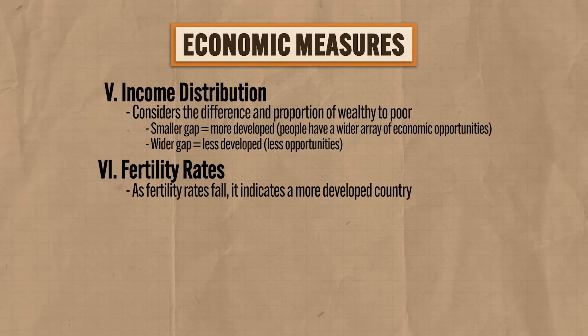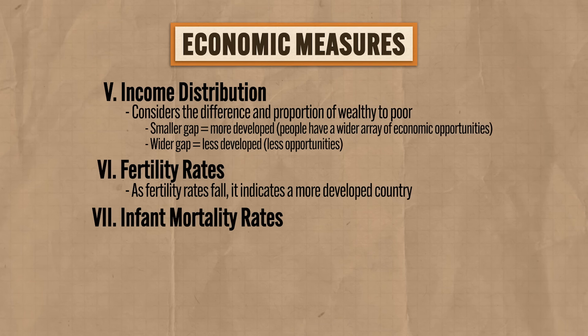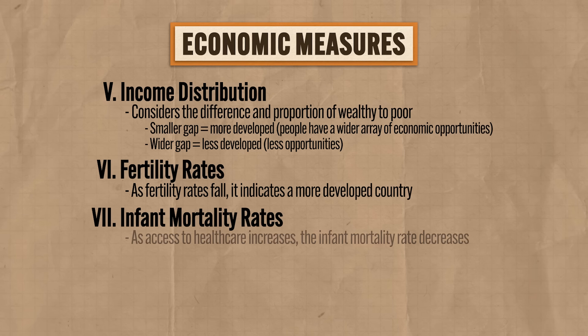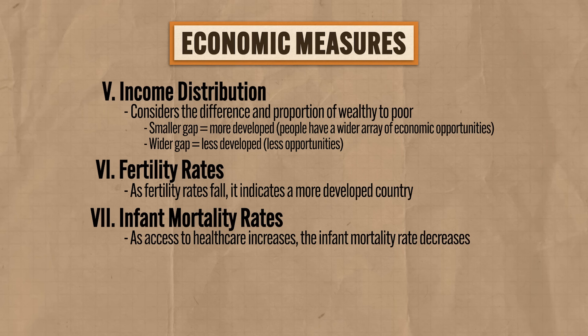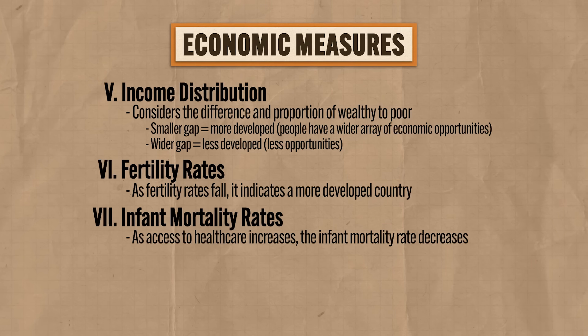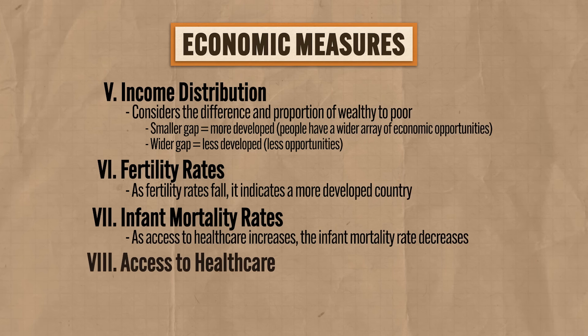Seventh, and related, is a measurement of a country's infant mortality rates. As access to healthcare increases, the infant mortality rate decreases and vice versa. Since it's a general rule that women in wealthier countries have more access to healthcare than in more impoverished countries, infant mortality rate is a good indicator of a country's level of development. The eighth measure of development is a country's access to healthcare — but here we're talking about the whole population, not just mothers.